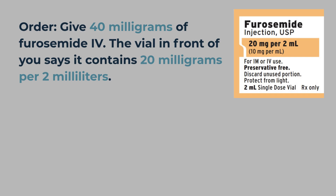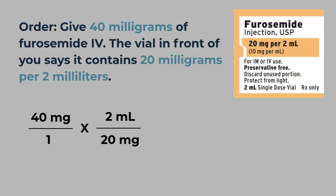Let's walk through a medication problem together. You're ordered to give 40 milligrams of furosemide IV. The vial in front of you says it contains 20 milligrams per 2 milliliters. Start with what you're being asked to give: 40 milligrams. Next, bring in your conversion factor from the vial: 2 milliliters for every 20 milligrams. Set it up so the milligrams cancel out — that leaves you with milliliters, the unit you're solving for.